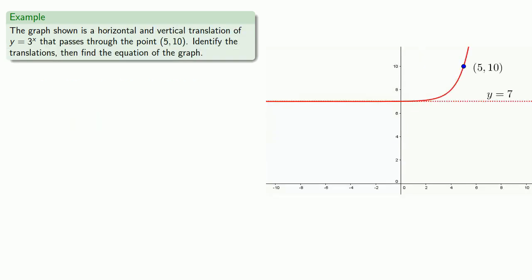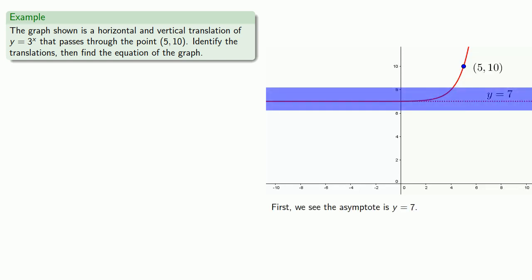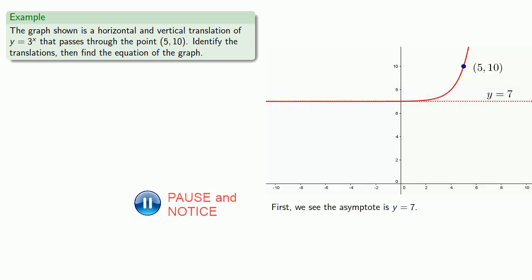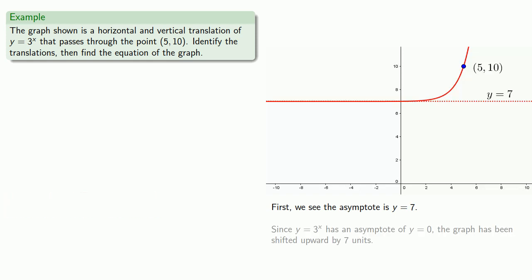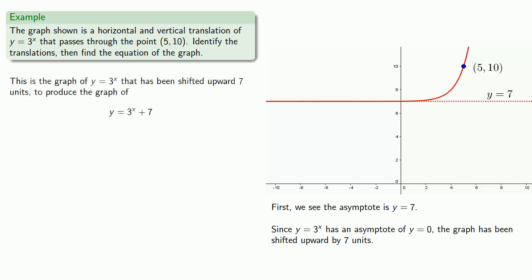What if we include both a vertical and a horizontal translation? The first useful thing to notice is that the asymptote is y equals 7. Since the graph of y equals 3 to the power x has an asymptote of y equals 0, the graph has been shifted upward by 7 units, producing the graph of y equals 3 to the x plus 7.